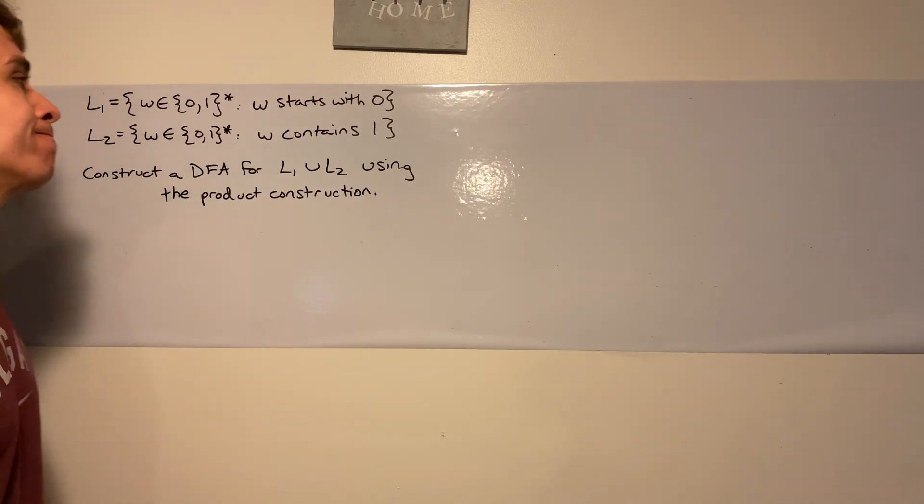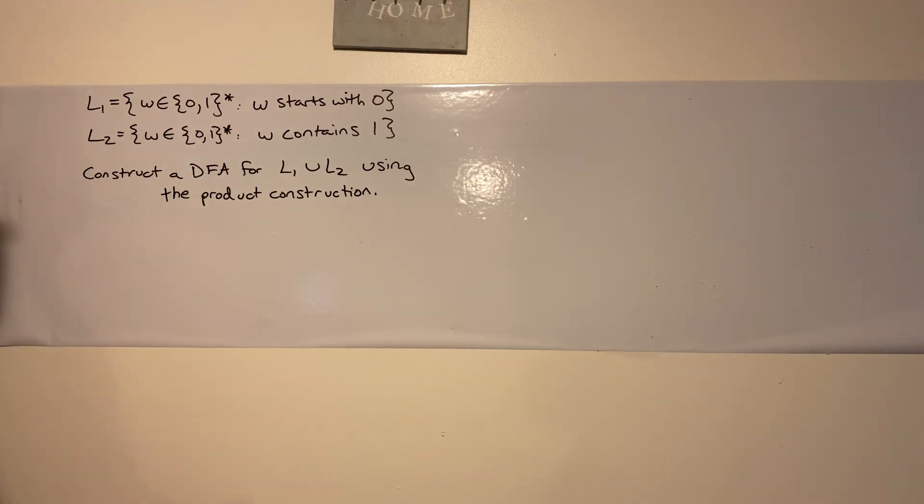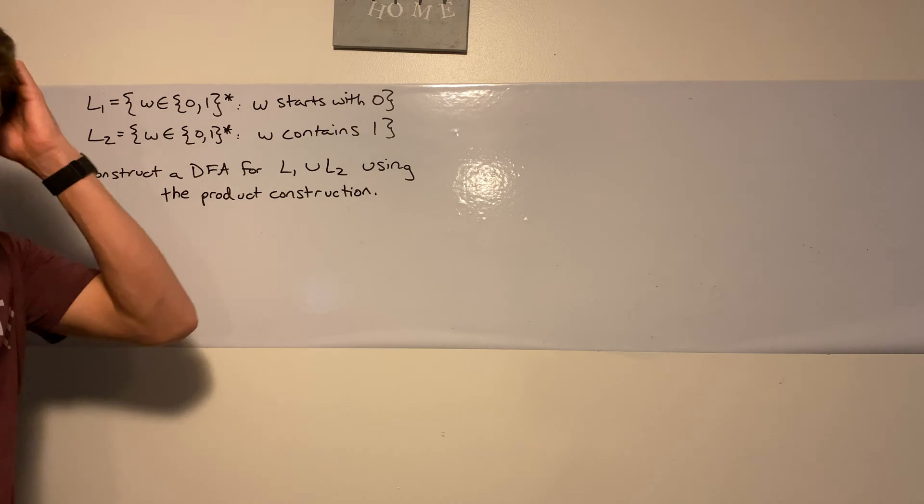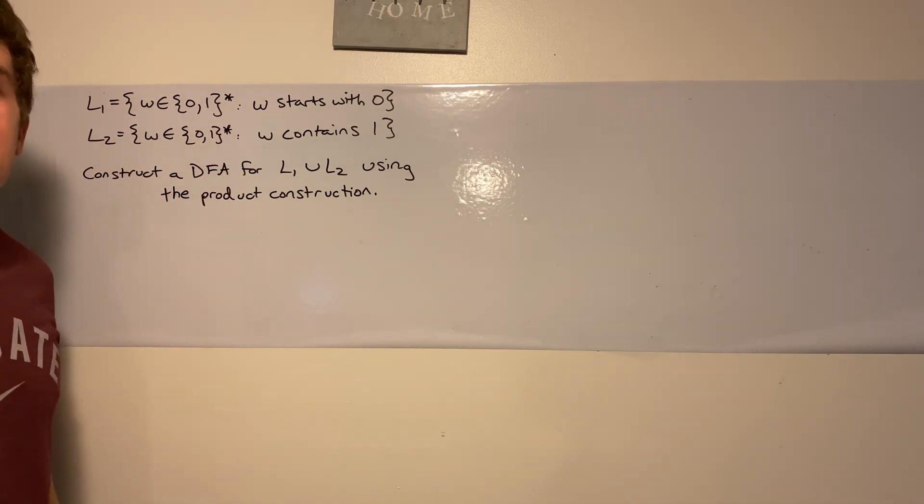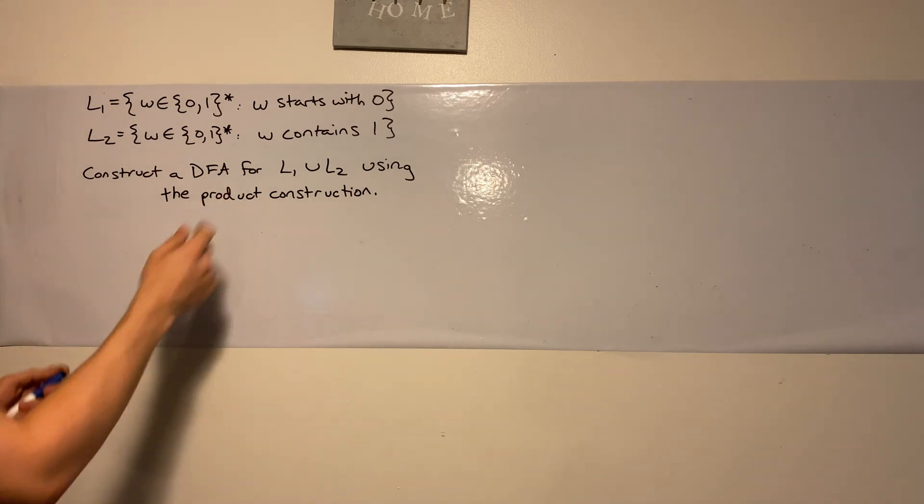I'm sad, guys. We have a problem here. We need to make a DFA using the dreaded product construction. But fortunately, we can make it easy. Want to see how? I think you do, don't you? Alright, so how do we do this here?